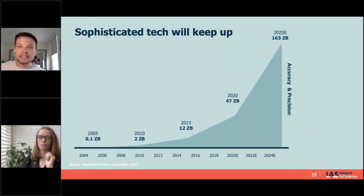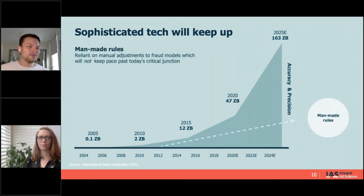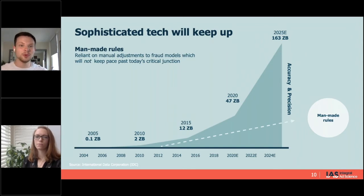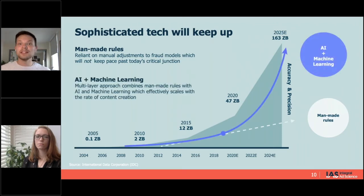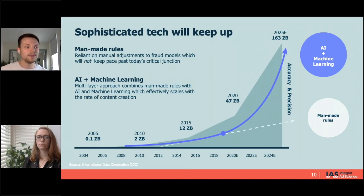In order to keep up with all this technology, it has to keep pace with that data creation to achieve reliable precision at scale. A forecast by the IDC shows that by 2025 we will have created 163 zettabytes of data — four times more than every word ever spoken in human history. Past solutions to tackle fraud relied on human-based rules, which worked relatively well, but humans can only handle so much data. Solutions powered by artificial intelligence and machine learning are able to scale with the rate at which content is being created, making them far more precise and accurate.